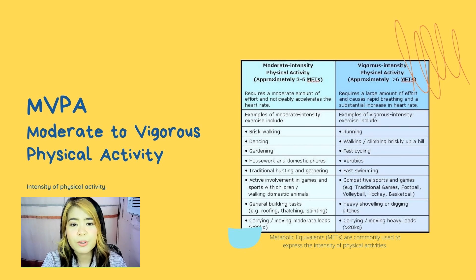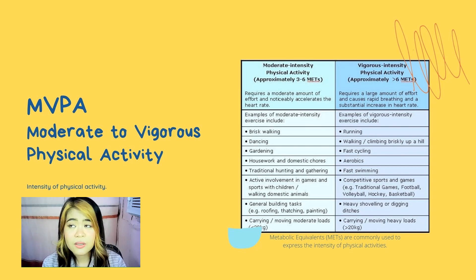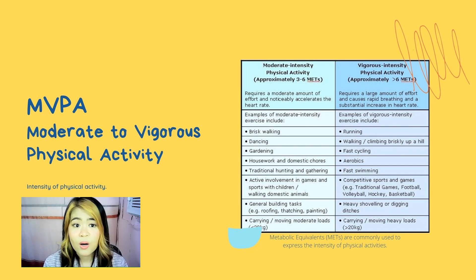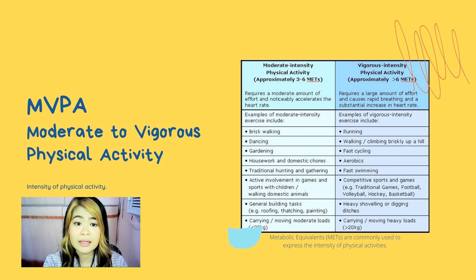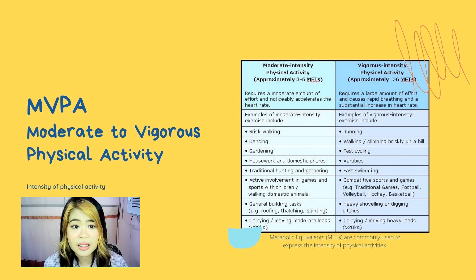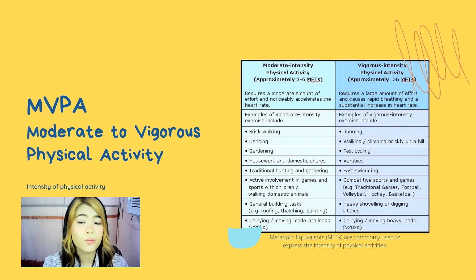Energy expenditure may differ from person to person based on several factors, including your age and fitness level. For example, a young athlete who exercises daily won't need to expend the same amount of energy during a brisk walk as an older sedentary person. For most healthy adults, MET values can be helpful in planning an exercise regimen or at least gauging how much you're getting out of your workout routine.